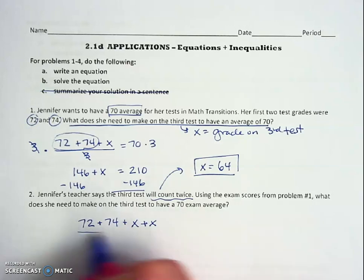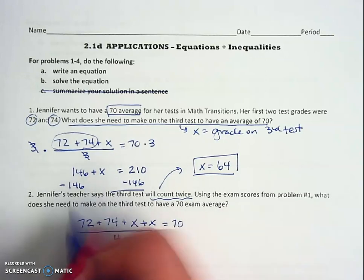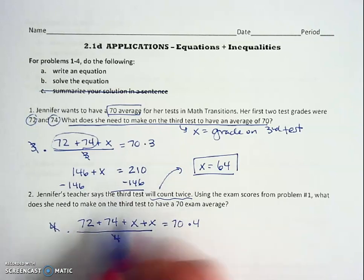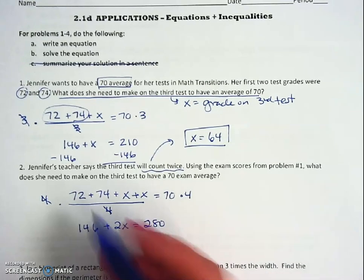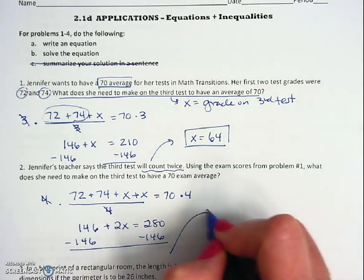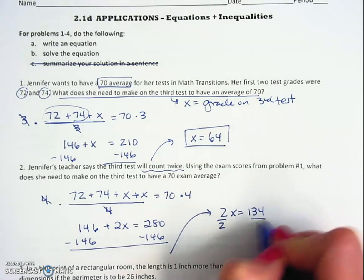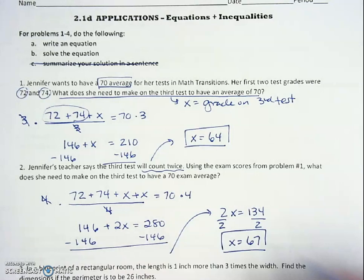Now I have four grades to divide by that I want to equal 70, so I start by multiplying by 4 this time. I still have 146 for the 72 and 74, 2x is 2x, and then I have 280 on the right. Now I subtract the 146 from both sides, I get 2x equals 134, and now I divide by 2 and now she needs at least a 67 in order to have a 70 average.